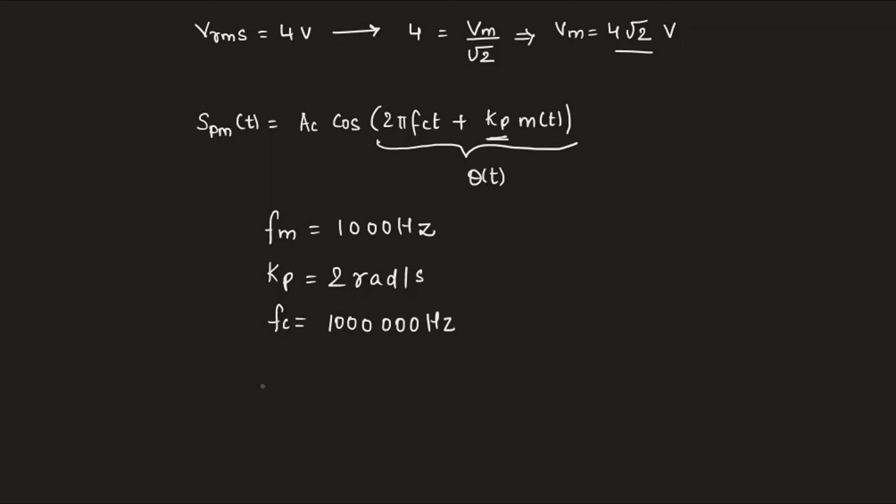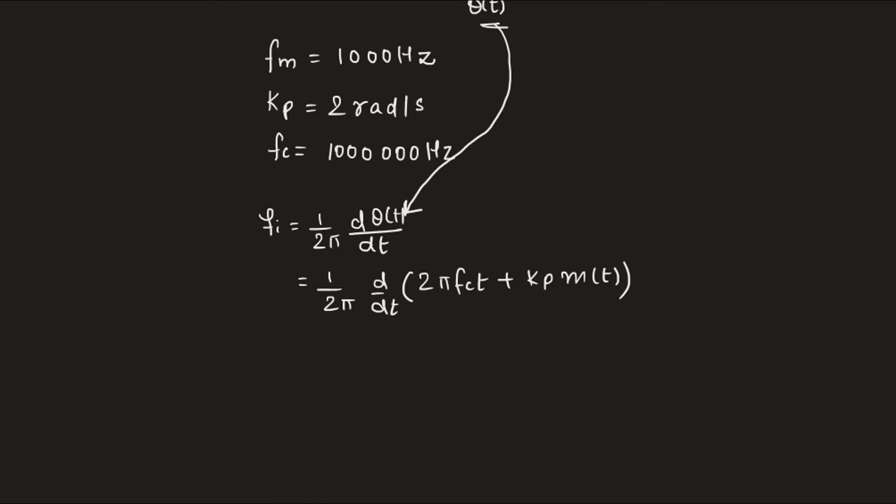Now the mathematical equation for instantaneous frequency is given. Substituting the phase angle of the phase modulated signal in this expression, and differentiating this equation once with respect to t, we get the result.